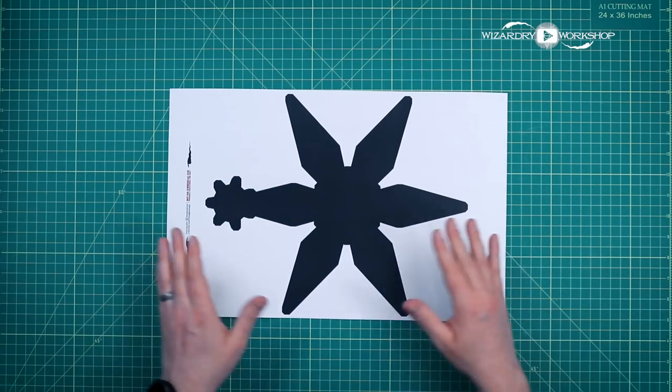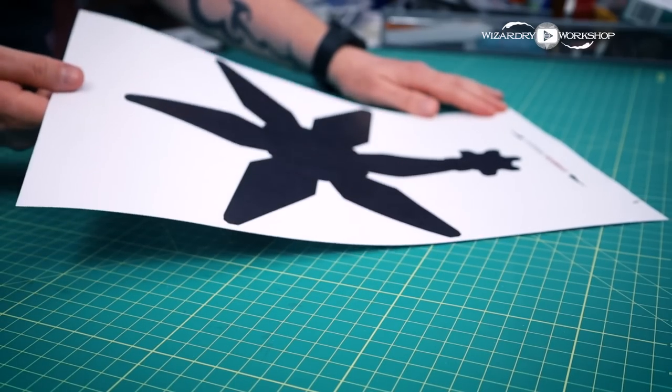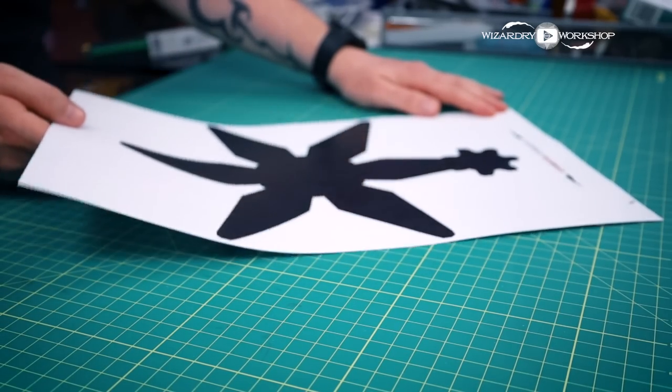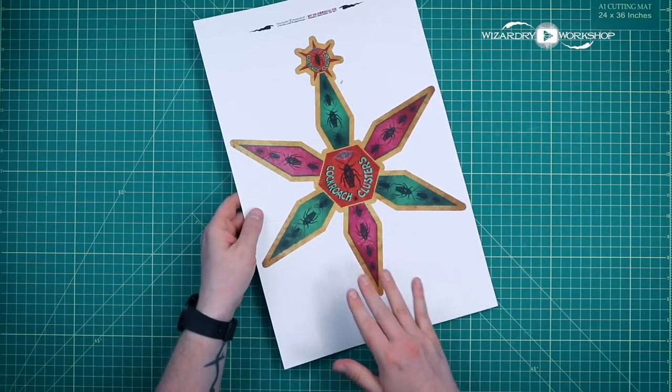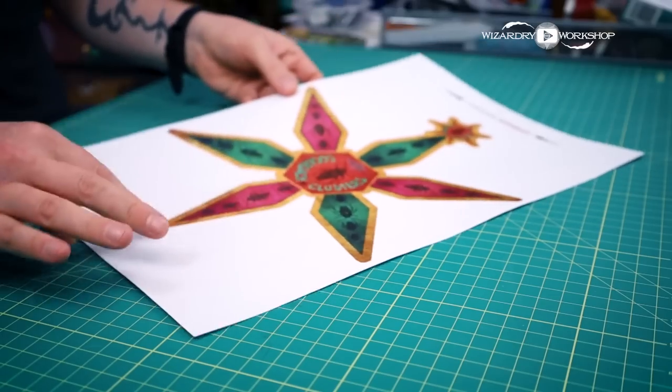But I am also planning to foil mine, so I needed to print a solid black on this side with a laser printer in order to heat transfer my foil onto it. If you don't want to do the foiling or if you can't do the foiling, then you can just print it single-sided, but I did print the double-sided version.